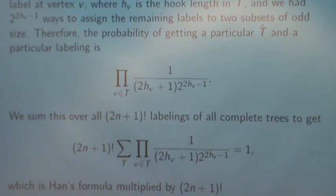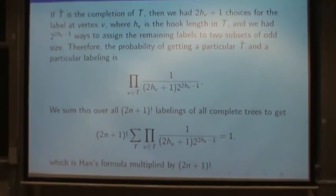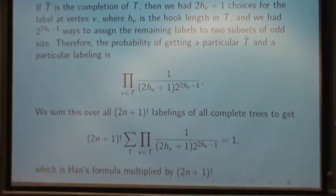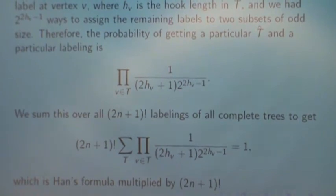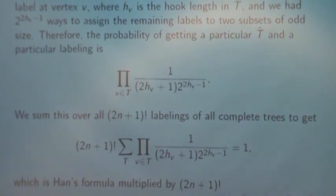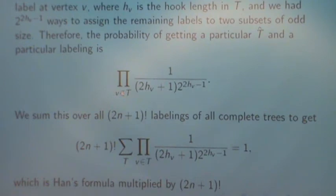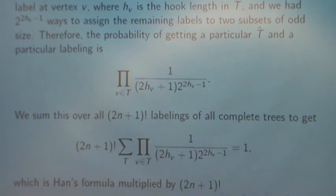And the proof again comes right out from that argument. If T-hat is the completion of a tree T, then we had 2hv plus 1 choices for the label at vertex v, where hv is the hook length from the tree T. And we had 2 to the 2hv minus 1 ways to assign the remaining labels, because we had to keep both sets odd. So the probability of getting a particular T-hat and a particular labeling is the product — this is really a product of all the vertices in T-hat. But the vertices in T are exactly those vertices in T-hat that aren't leaves. And for the leaves, there was only one choice. So we have 1 over 2hv plus 1 times 2 to the 2hv minus 1.